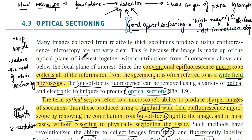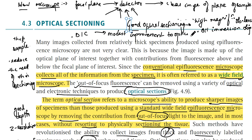One such method is differential interference contrast (DIC), which provides modest improvement to optical sectioning. In DIC, the sample is effectively illuminated by two slightly offset light sources, which then interfere to produce an image resulting from the phase difference of the two sources.